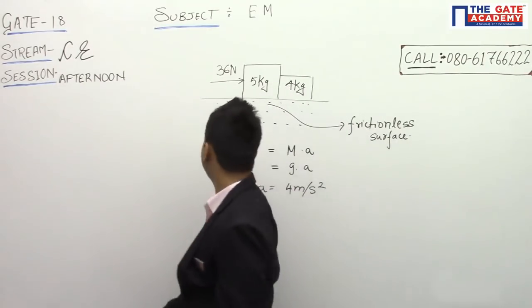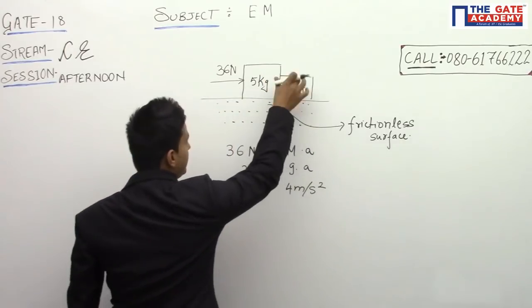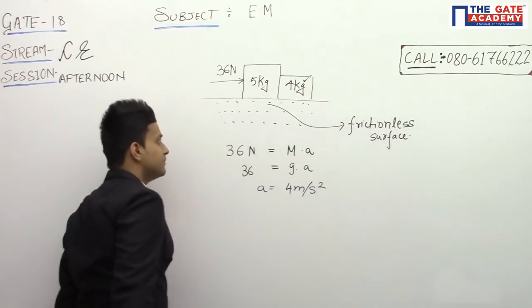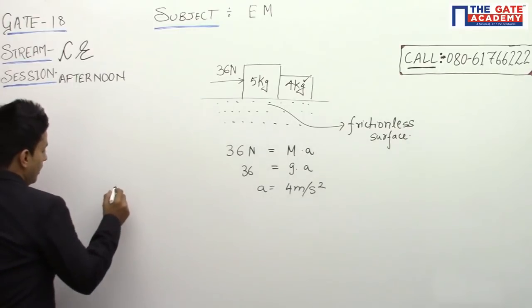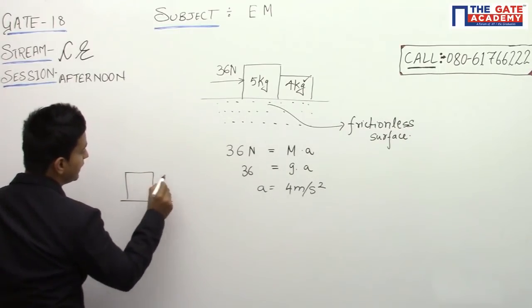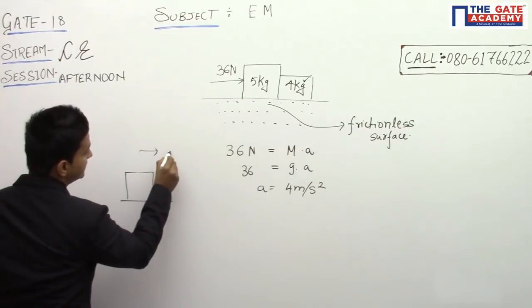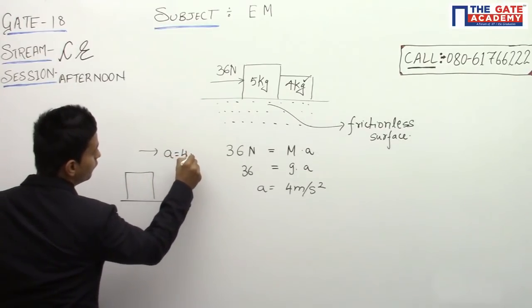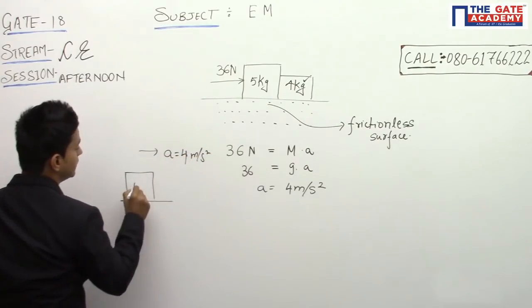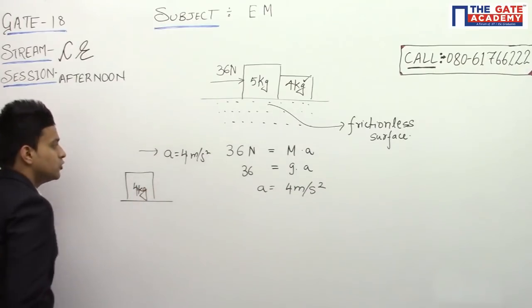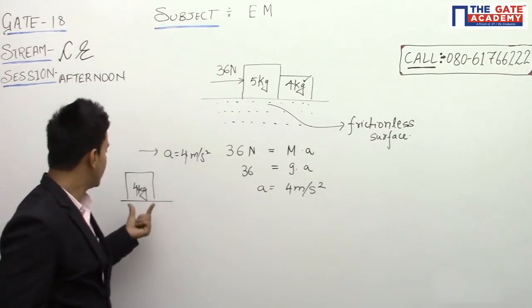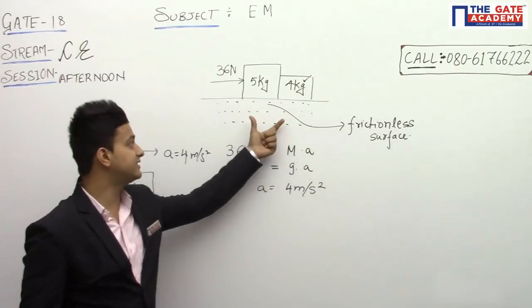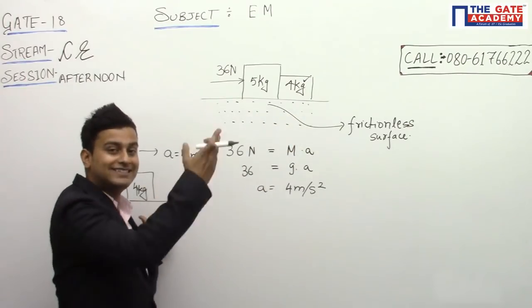Now if we cut this section or we see the free body diagram of this particular body, the 4 kg one, we will see that this is also moving in this particular direction with an acceleration of a equals 4 meters per second squared. This is of 4 kg, so to move in this direction there should be—mind you, we have just taken the FBD here, so we are just seeing a part of the system.